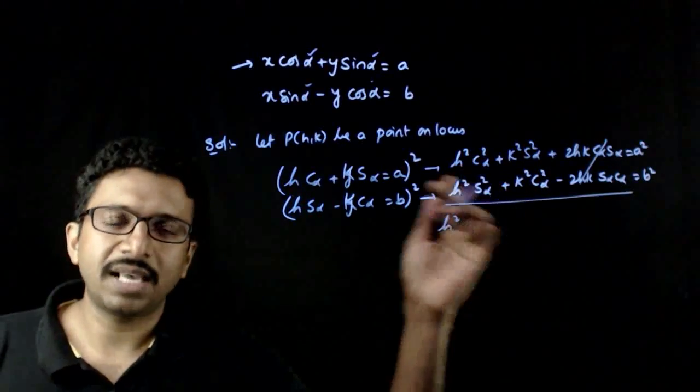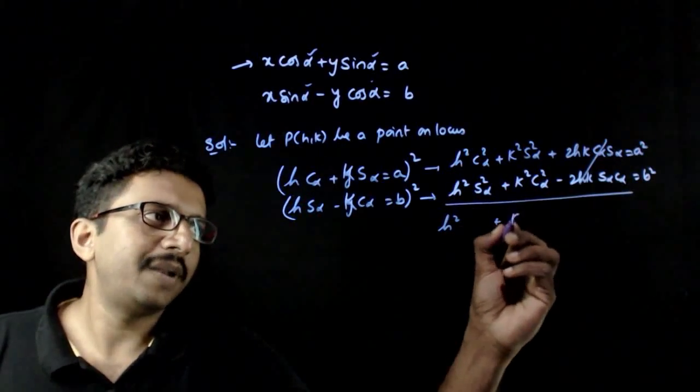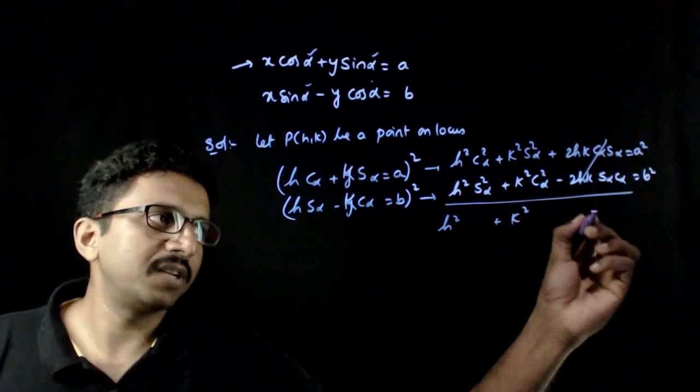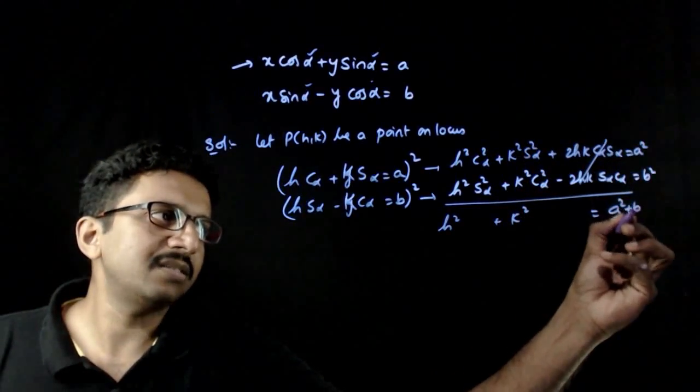h square times sin square plus cos square is 1, plus k square times sin square plus cos square is 1, is equal to a square plus b square.